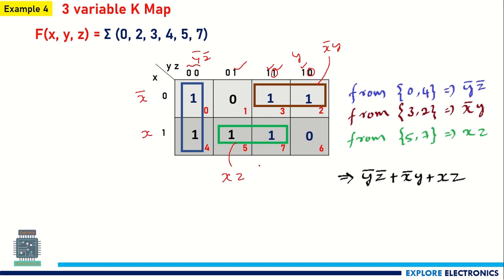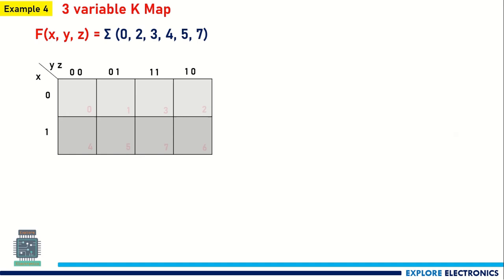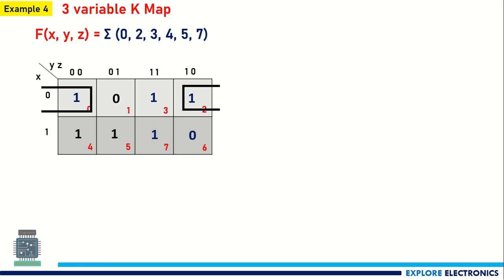Here we will get the question: why cannot we group these two and why cannot we group these two differently? We can also group in other ways. Let us see this example by grouping differently. Here again I am writing the same values. Now I am starting to group in this way: first taking cells 0 and 2, then cells 0 and 4, then cells 3 and 7, then cells 4 and 5, and also cells 5 and 7.